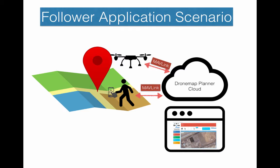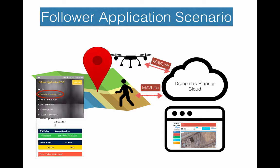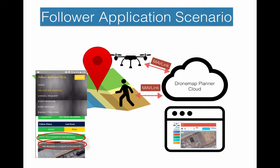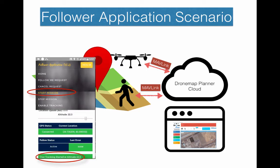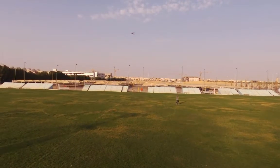A person has a mobile device with the follower client application. The person first requests from the cloud a follower request. The cloud will search for available drones and will assign the closest drone to the person. Once a drone is allocated, the person will start the following mission, and the drone will take off and start following the person as he moves.